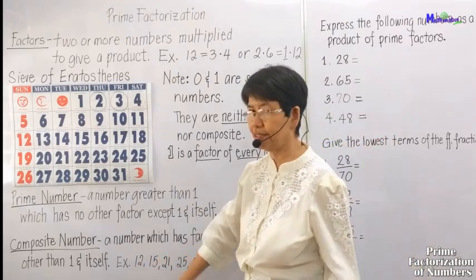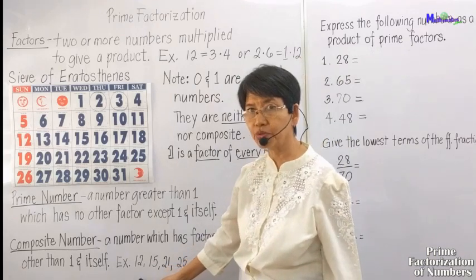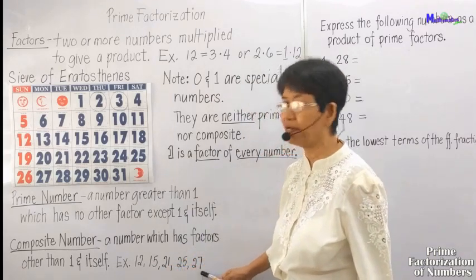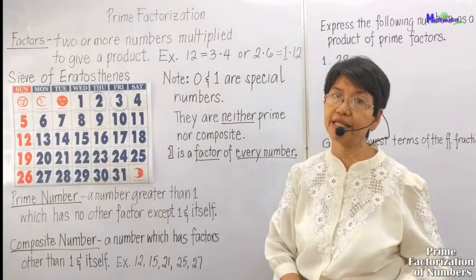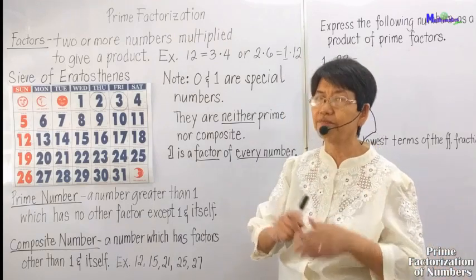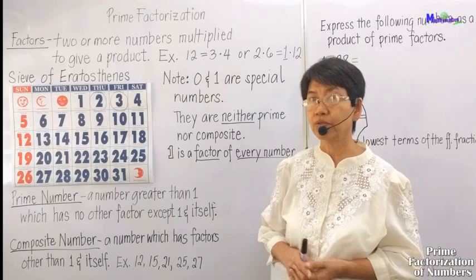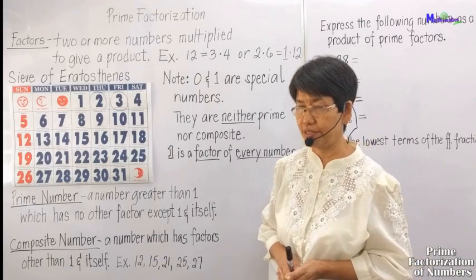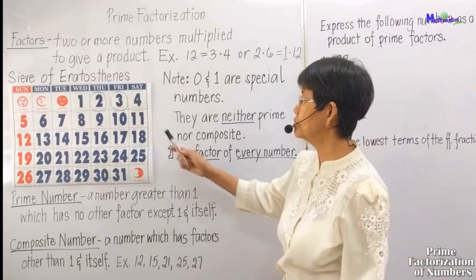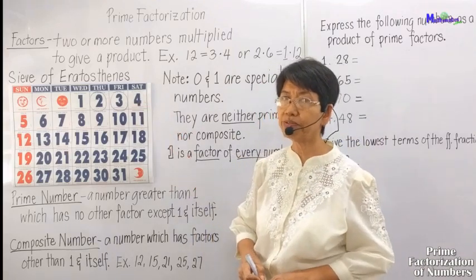Another term is composite number — a composite number has factors other than 1 and itself. Examples are the numbers 12, 15, 21, 25, 27, and so on, as long as you can factor it with more than two factors.